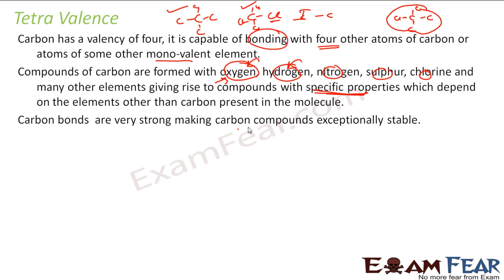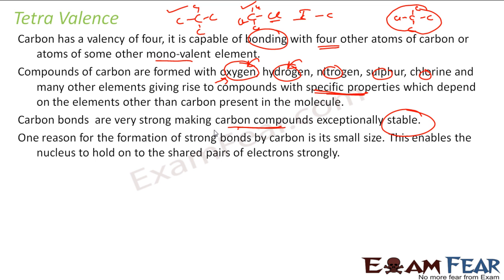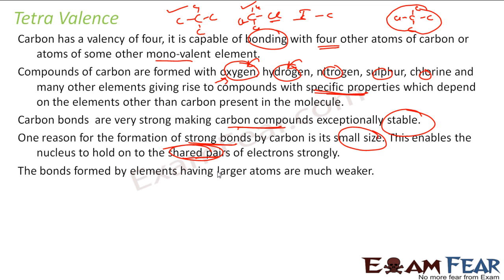Carbon is very strong in making covalent compounds, and they are exceptionally stable. One reason for this stability is that the carbon atom is very small in size, which makes its bonds strong. Because of its small size, it can hold the shared pair of electrons strongly. The bonds formed by elements with larger atoms are much weaker — for example, sulfur is weaker. Carbon's small size gives it a stronger bond.